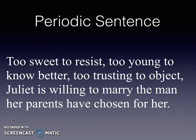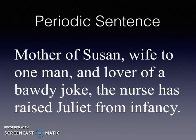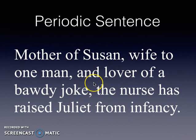So it does reveal something about the character — it gives us a little bit more about Juliet. Juliet, mother of Susan, wife of one man, and lover of a bawdy joke — the nurse has raised Juliet from infancy. I have a noun, a noun, and a noun, and that's why each of these phrases is parallel.